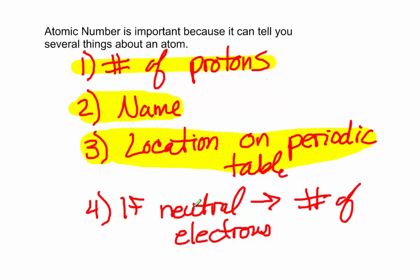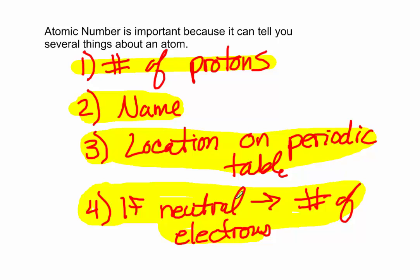And lastly, if the atom is neutral, then the atomic number is going to be the same as the number of electrons. So if you have 8 protons, you also would have 8 electrons. If you had 13 protons, you would have 13 electrons, so long as the atom is neutral.